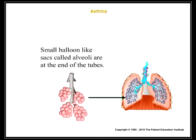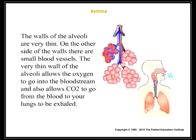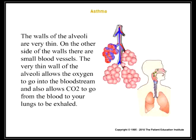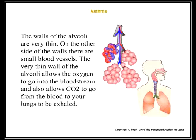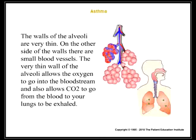Small balloon-like sacs called alveoli are at the end of the tubes. The walls of the alveoli are very thin. On the other side of the walls, there are small blood vessels. The very thin wall of the alveoli allows the oxygen to go into the bloodstream and also allows CO2 to go from the blood to your lungs to be exhaled.